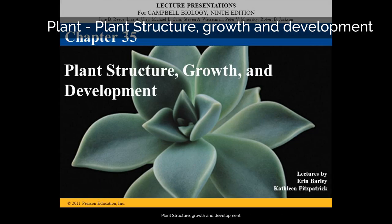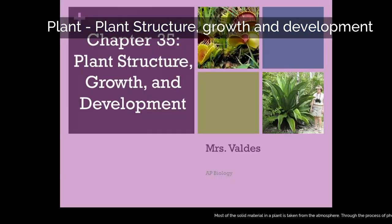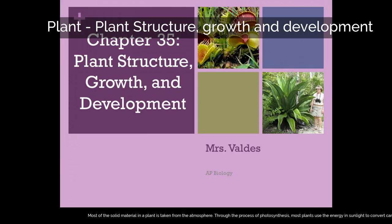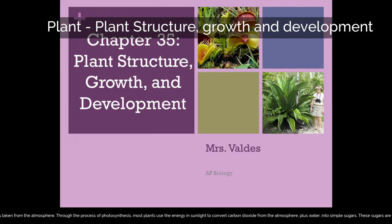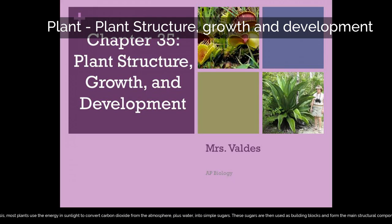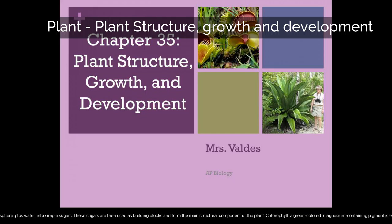Plant Structure, Growth and Development. Most of the solid material in a plant is taken from the atmosphere. Through the process of photosynthesis, most plants use the energy in sunlight to convert carbon dioxide from the atmosphere, plus water, into simple sugars. These sugars are then used as building blocks and form the main structural component of the plant.